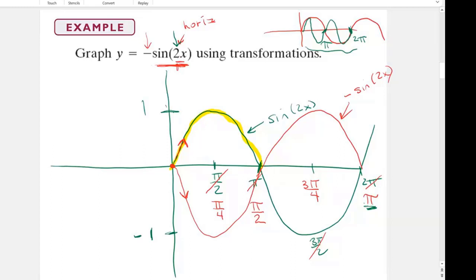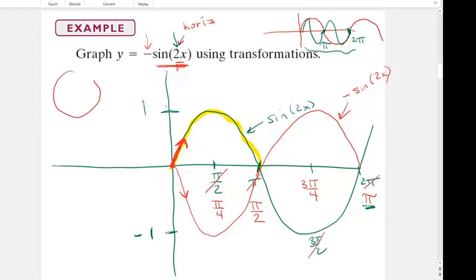A normal sine graph would always start at 0. Notice how it's always going positive. These are just representations of the unit circle.